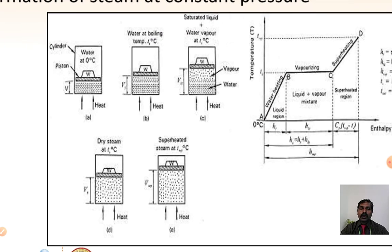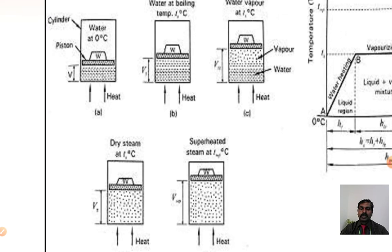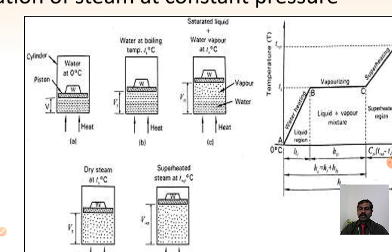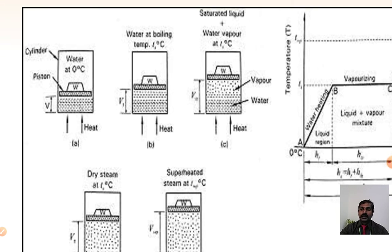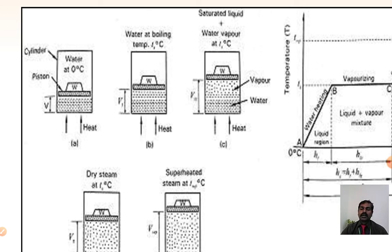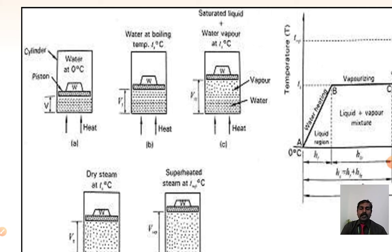This image shows how steam is getting formed and what temperatures are required. We can see a cylinder with some volume of water. Imagine water at zero degrees — there is a piston on top with a load W. When I am heating the water at zero degrees, it just starts to boil slightly, and the volume of liquid is increasing as heat is added. After that, if you keep giving heat, some portion of water will become vapor and the remaining will stay as water.